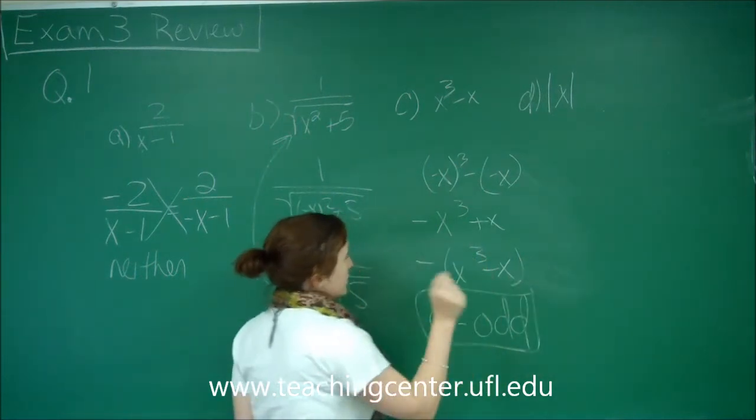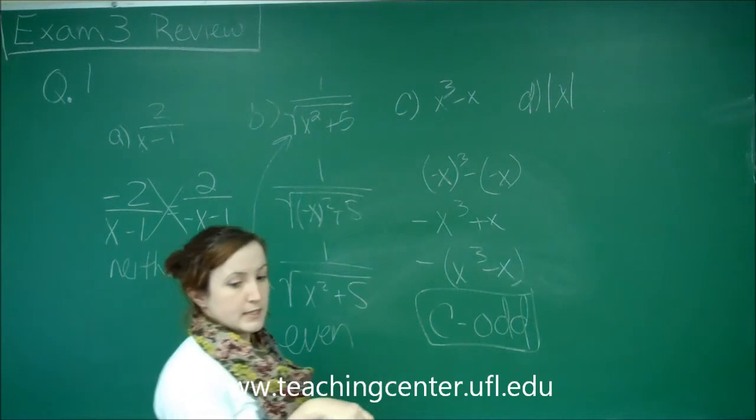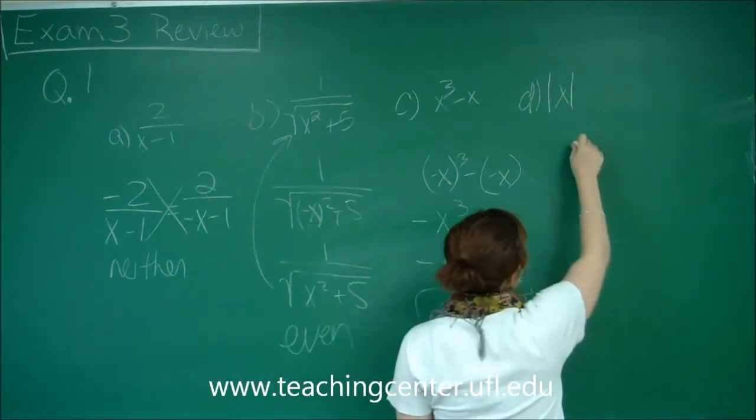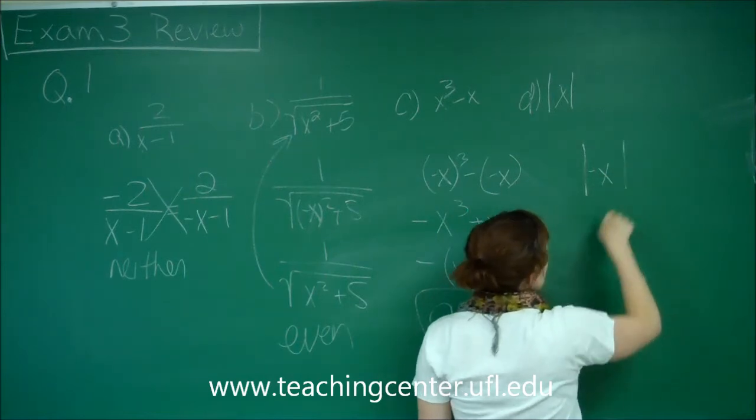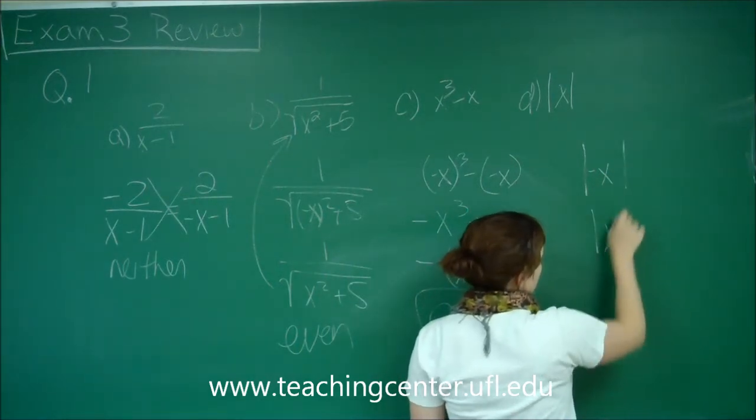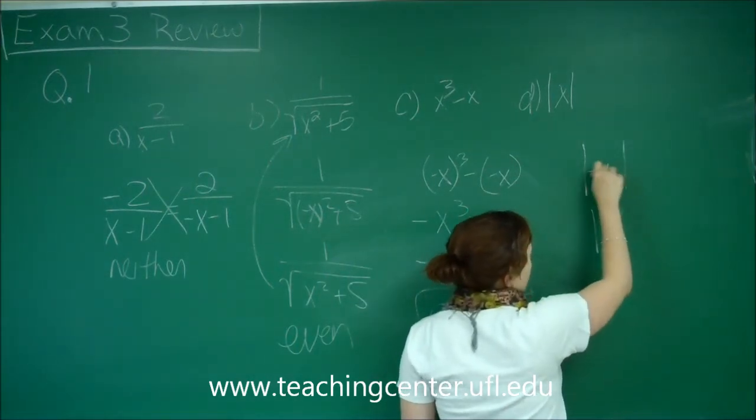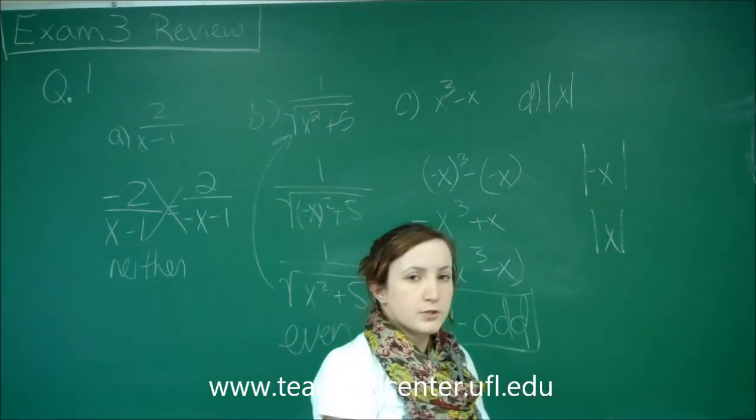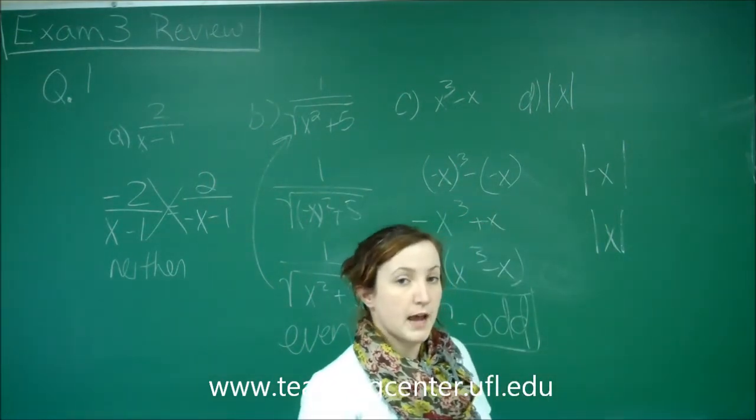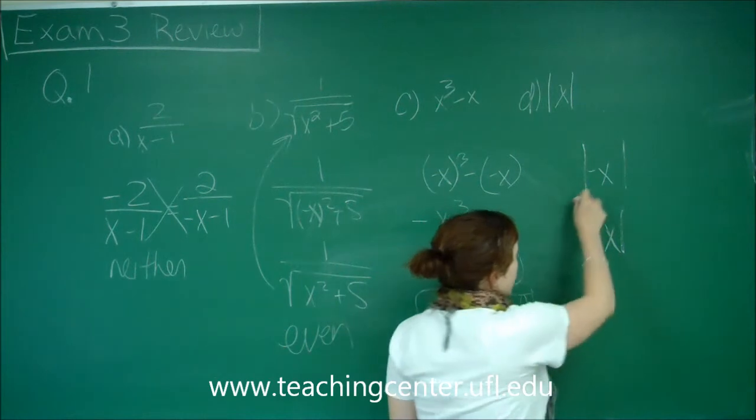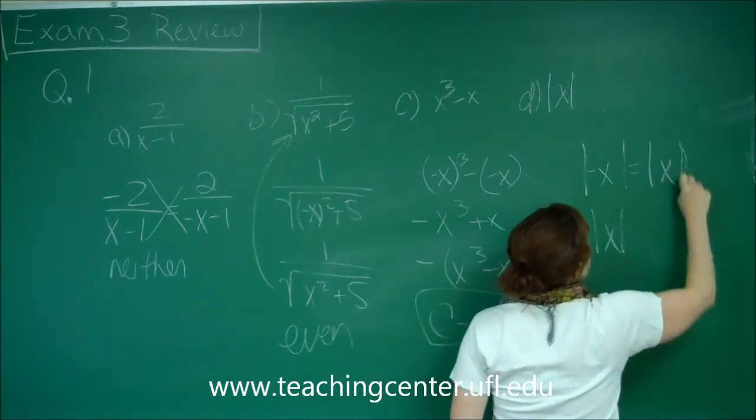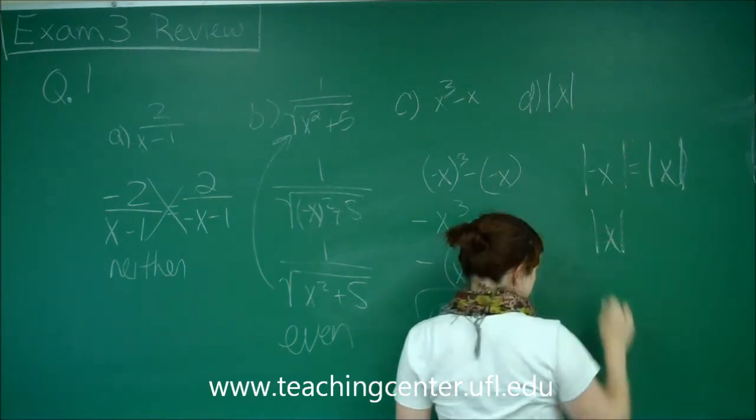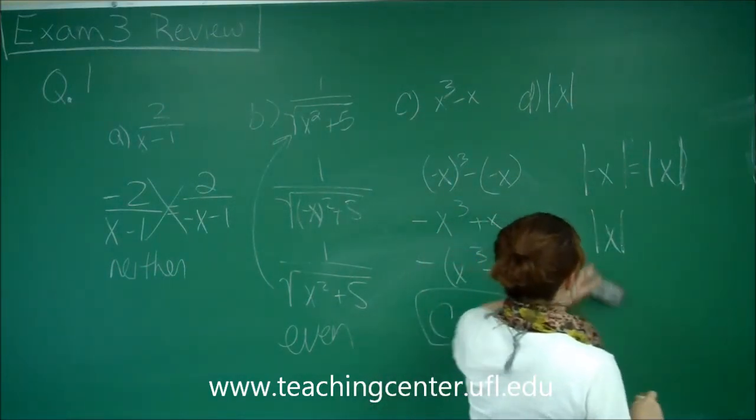So C will be certainly part of our answer, but we just have to check D. And D, we have the absolute value of x. And so when we plug in the negative x, well, that just gives us absolute value of x. Because if we plug in a negative value, that's equivalent to plugging in the positive value because of the absolute value bars. So the negative absolute value of x is going to equal the absolute value of x, which is our original function making this last function even.